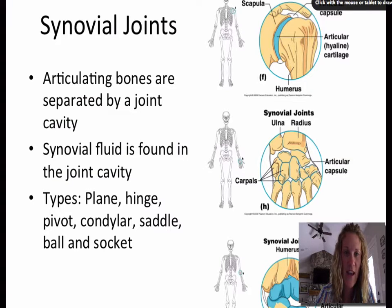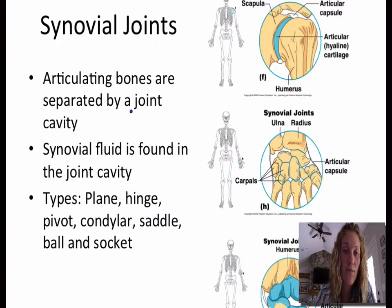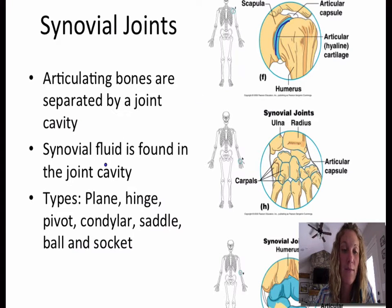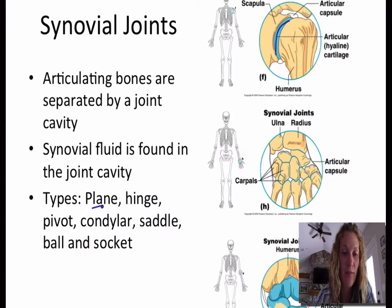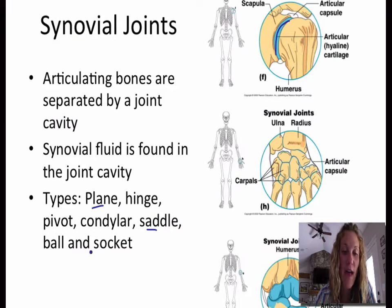Next up are the synovial joints. Synovial joints are articulating bones that are separated by a joint cavity. Synovial fluid is found within the joint cavity. There are a couple of different types of synovial joints: we have plane joints, hinge, pivot, condylar, saddle, and ball and socket.